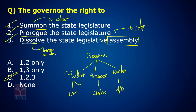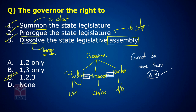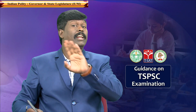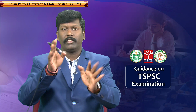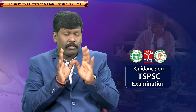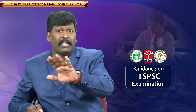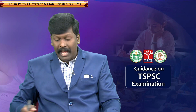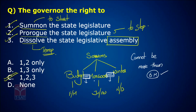The gap between two sessions cannot be more than six months. When the gap between two sessions of the assembly exceeds six months, the assembly is considered automatically dissolved. This gap between two sessions is called 'recess,' which means to rest.